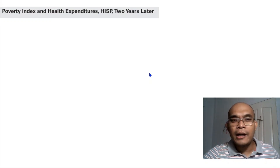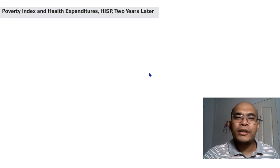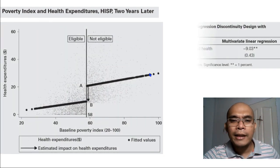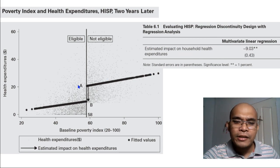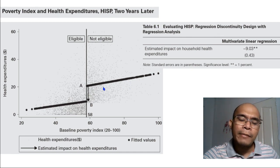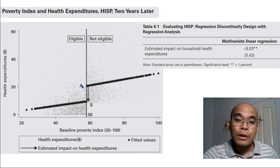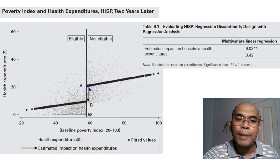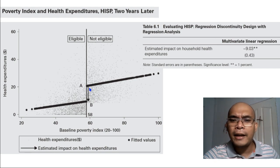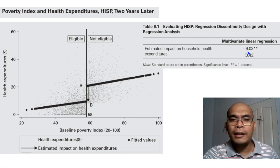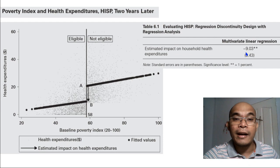Assuming we already gave the subsidy to recipients, two years later we conducted a statistical analysis. The graph shows a drop in health expenditures at the threshold — respondents just below the threshold show lower health expenditures compared to those just above. This arrow represents the estimated impact on health expenditures. To identify the magnitude of that impact, we can conduct multivariate regression. Based on the result, we have a value of negative 9.3 — the negative indicates a drop in health expenditures.